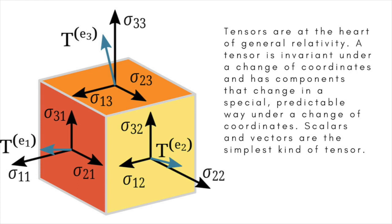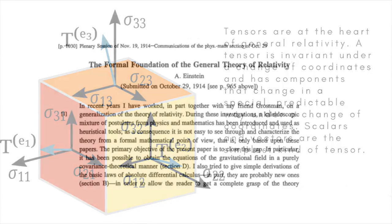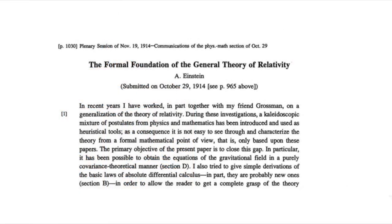When Max Planck, the father of quantum mechanics, visited Einstein in 1913 and Einstein told him how things stood with his new scheme of gravity, Planck said: 'As an older friend I must advise you against it, for in the first place you will not succeed, and even if you succeed no one will believe you.'